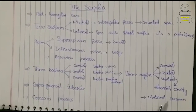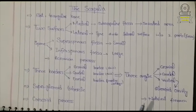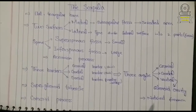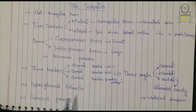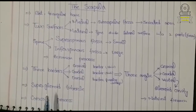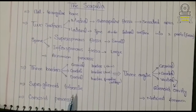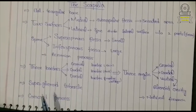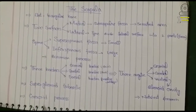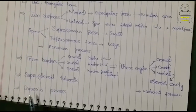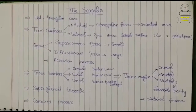Above the glenoid cavity, on the ventral side of the scapula bone, there is a tubercle called the supraglenoid tubercle. When we move from the supraglenoid tubercle toward the medial side, there is a process called the coracoid process.